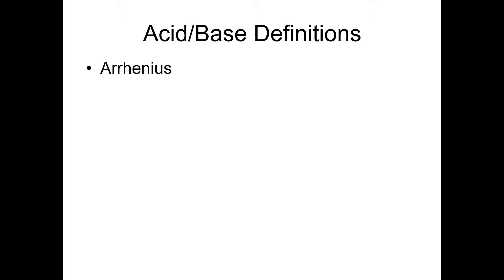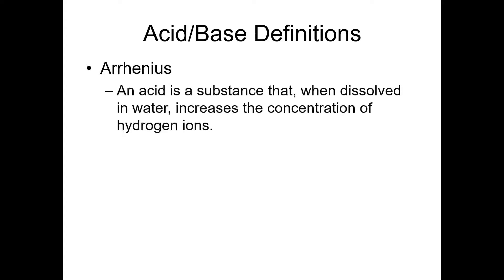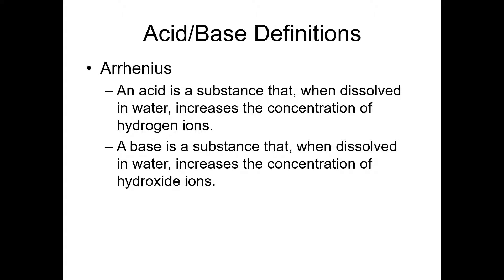We talked about this in chapter four. Svante Arrhenius, who is a Swedish chemist, developed definitions of acids and bases. An acid is something that when you dissolve it in water is going to increase the concentration of hydrogen ions, and a base is something that when you dissolve it in water is going to increase the concentration of hydroxide ions. That definition is useful in many contexts, but it only allows us to think about acids and bases in terms of their reactions with water, and not really in terms of their reactions with each other. So we need better definitions to allow us to do that.